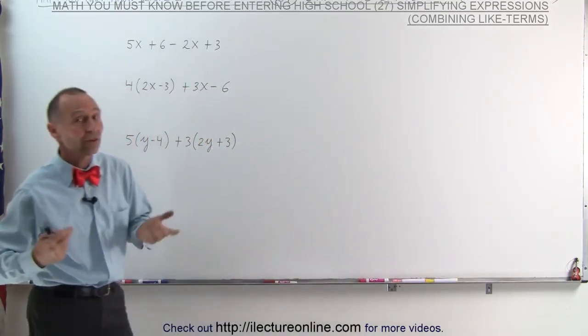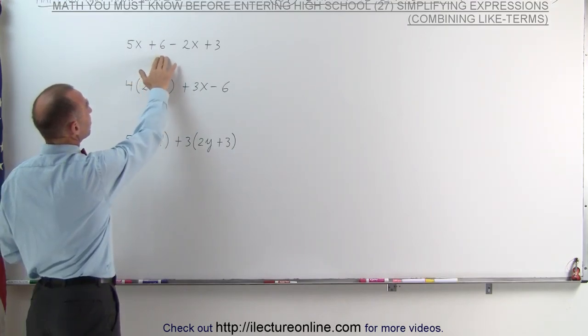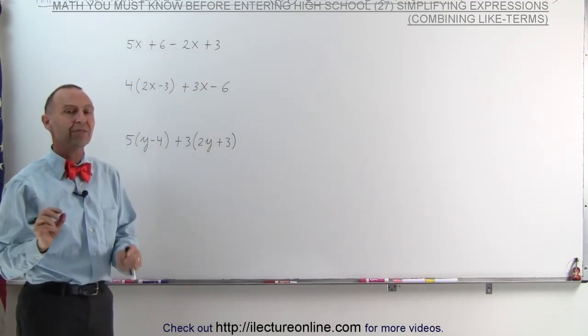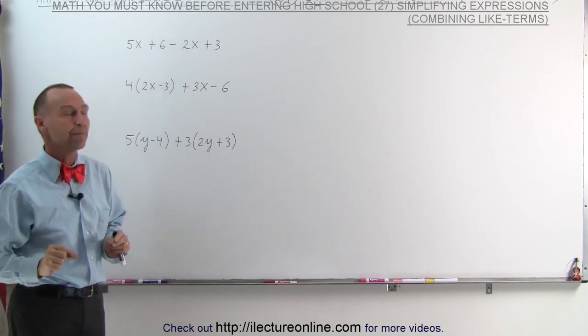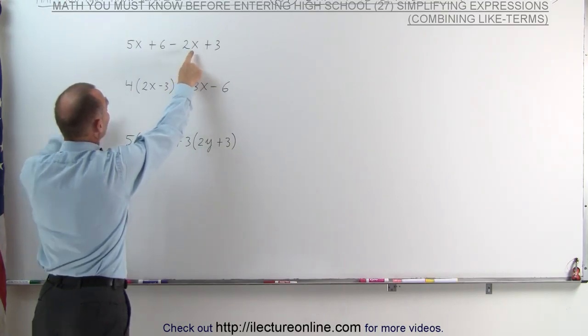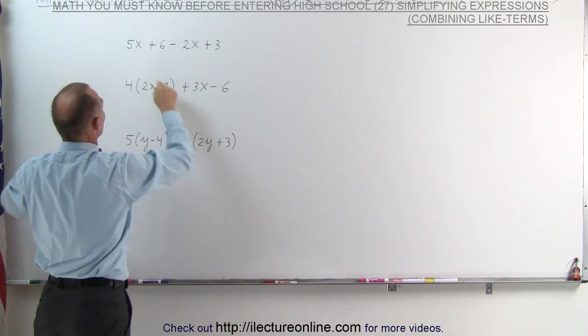That begs the question, what is a like term? Well, here we have an expression 5x plus 6 minus 2x plus 3. Like terms are terms that have the letter parts exactly the same. So here we have a term 5x, there we have a term minus 2x. Since they both have the letter part x, these are considered like terms.